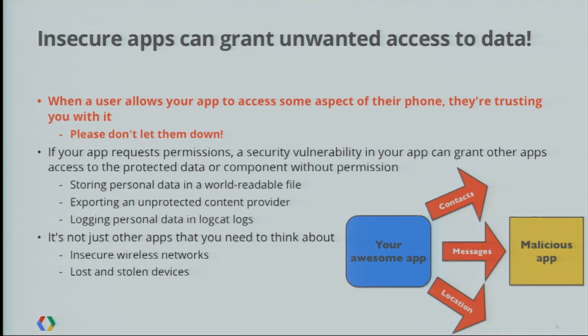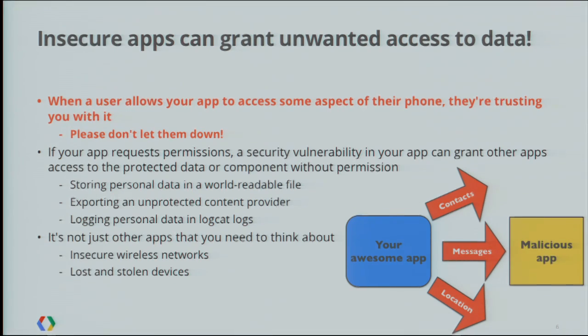One example of this kind of security vulnerability is storing the latest GPS location in a world-readable file — and I've seen this a few times. If you store the GPS location in a file that any app can read, this means that another app can access the phone's location without requesting either of the access location permissions — access coarse location or access fine location. You're basically removing the effectiveness of the location permission that Android normally requires to read the location data.